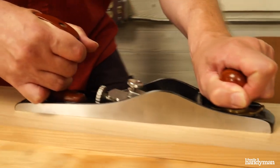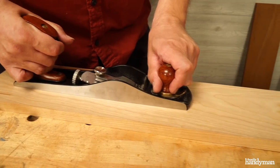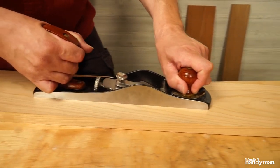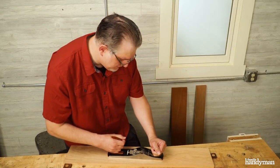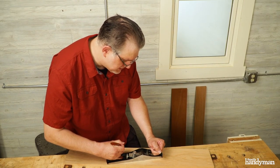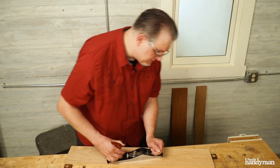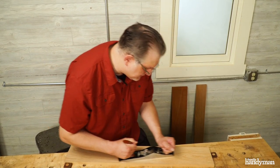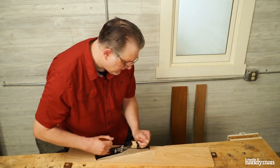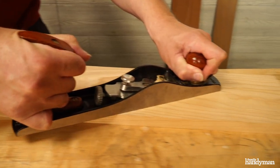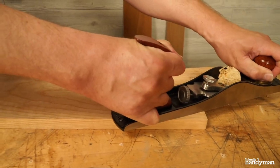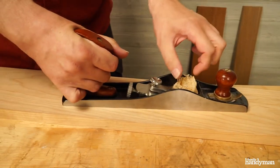Now when we're hand planing a piece of wood, it's important not to go straight on. What we want to do is skew that hand plane just a little bit. It makes the job the blade has to do a lot easier, and subsequently it's a lot easier for you to push. And look at those beautiful shavings we get.